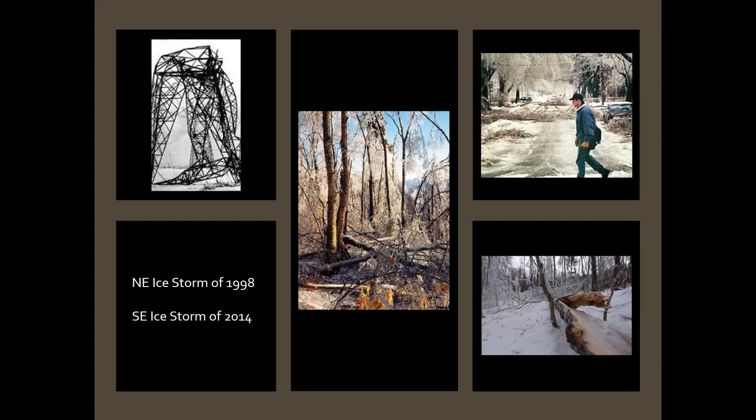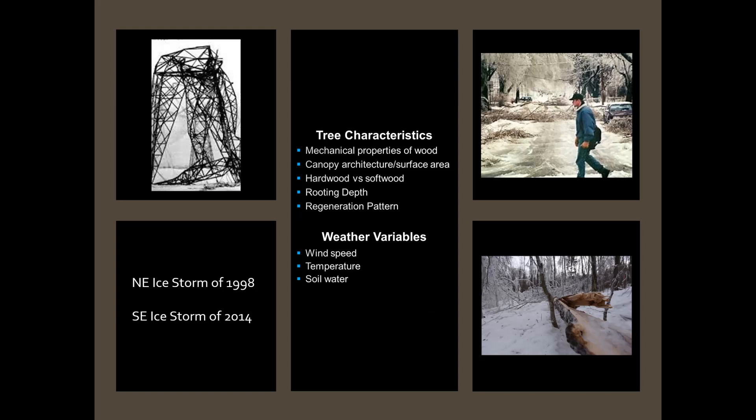Shifting gears to impacts, we know something about the impacts of ice storms on forests from observational studies. There are two storms that were widely studied in the US: the 1998 ice storm in the Northeast and the 2014 ice storm in the Southeast. They were both large storms affecting millions of acres of forest and caused billions of dollars of damage to forests and infrastructure. Based on these observational studies, we've begun to understand what makes some tree species more susceptible to ice damage than others, and what other factors exacerbate the effect.